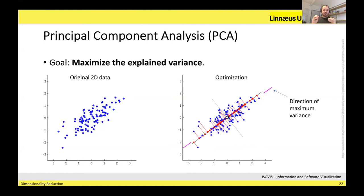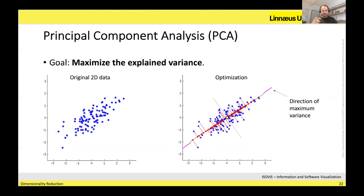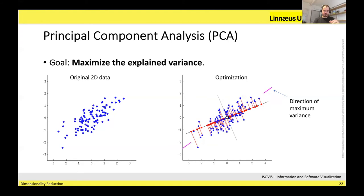This is a key difference between feature selection and dimensionality reduction. Feature selection means you have to choose either X or Y and discard the other. With dimensionality reduction, you get a diagonal axis that is actually a combination of both X and Y. You don't throw any features away — you combine them into a new one that best explains the variance of your dataset.